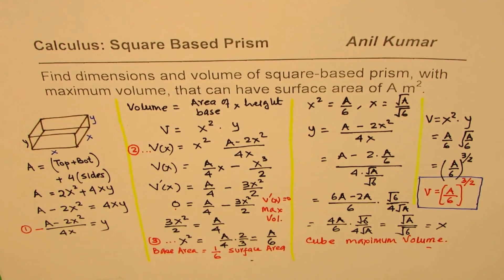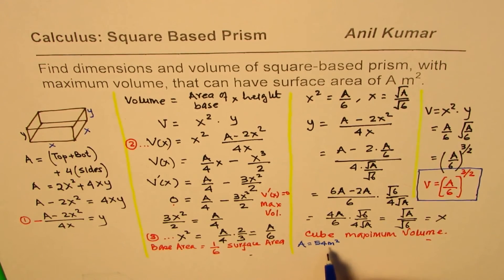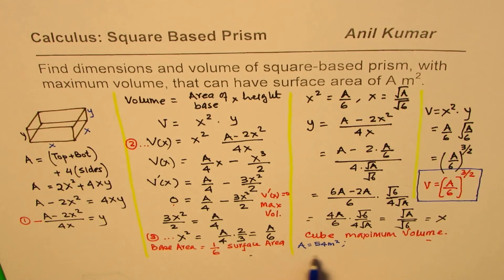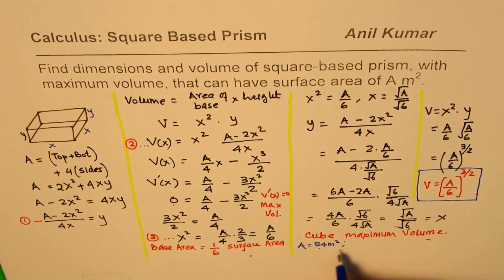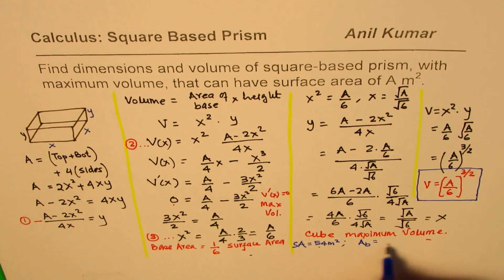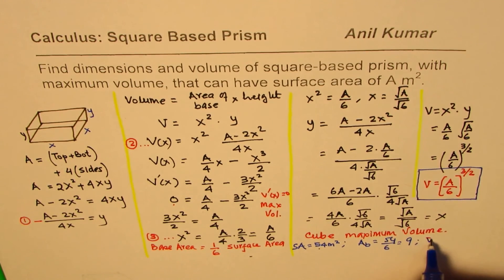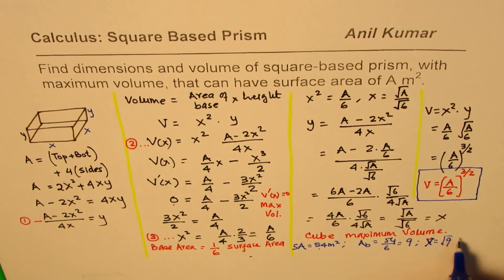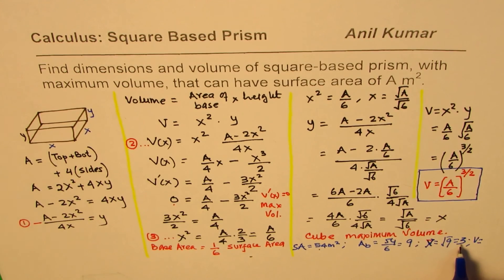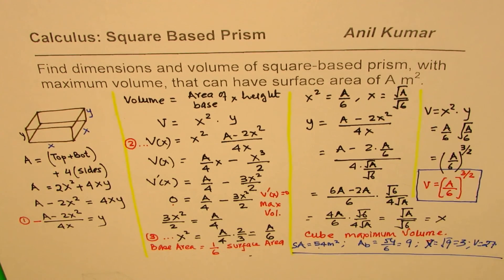Once you know these relations, you can solve examples. For instance, if the surface area is 54 m², we use these relations directly. Since it's a cube with maximum volume, the area of the base is x² = 54/6 = 9, so x = √9 = 3 m. The volume is then V = 3³ = 27 m³. Easily, we can get all values once we understand these relations.